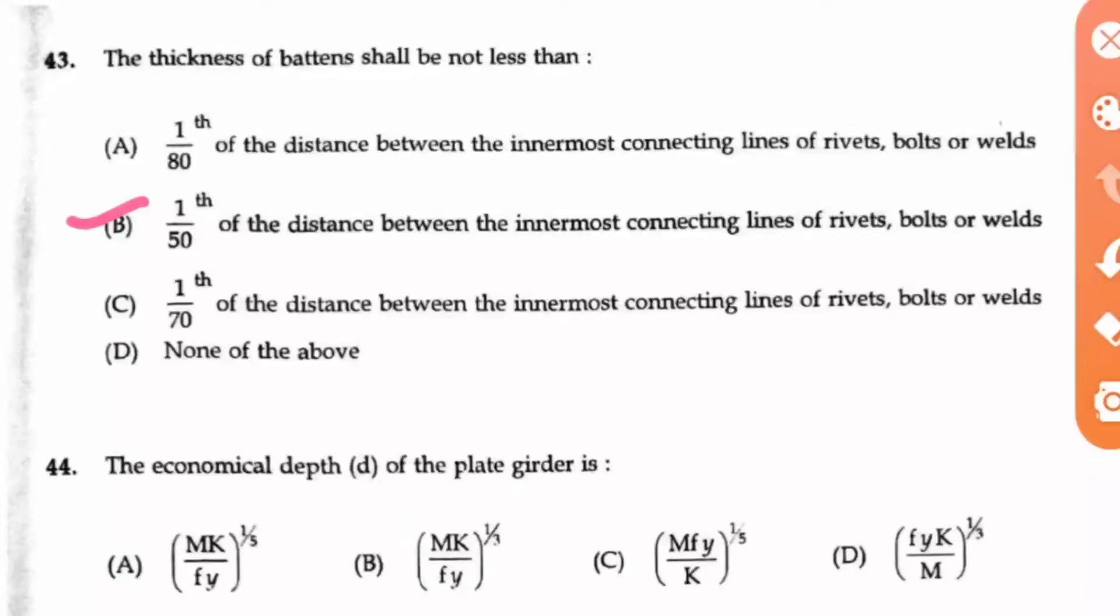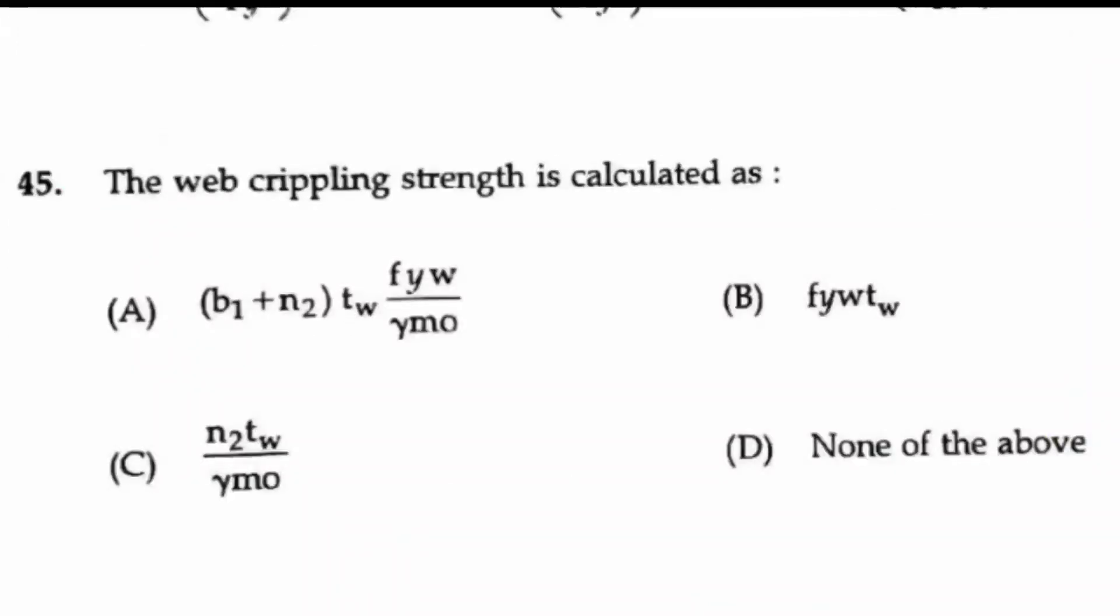Option B is the right answer: 1/50th of the distance between the innermost connecting lines of rivets, bolts, or welds. Question 44: The economical depth d of the plate girder is...